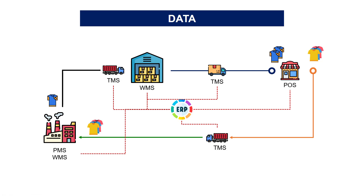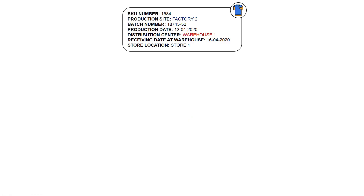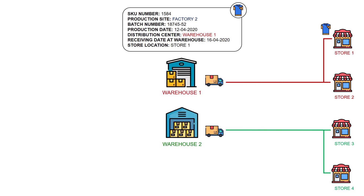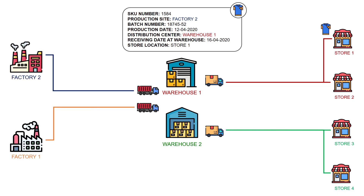Now that we know where to take the data, what can we do with it? The first case study is to implement traceability of the products. Let's imagine that you have this t-shirt sold in store one and you would like to know, to improve the recycling process, where it has been produced. First, you can track from which warehouse it has been delivered using the warehouse management system and the transportation management system. Then you can use the production management system or the master data to track from which factory it has been produced and using which raw material. This ensures a smooth process for the recycling.